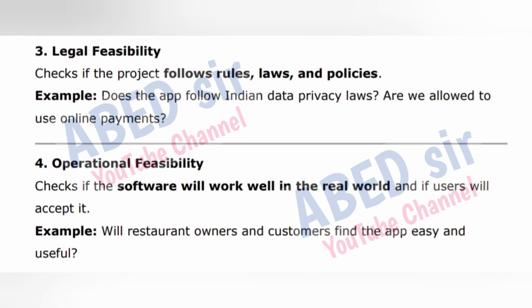Type three: Legal Feasibility. Checks if the project follows rules, laws, and policies. Example: does the app follow Indian data privacy laws? Are we allowed to use online payments? Type four: Operational Feasibility. Checks if the software will work well in the real world and if users will accept it. Example: will restaurant owners and customers find the app easy and useful?